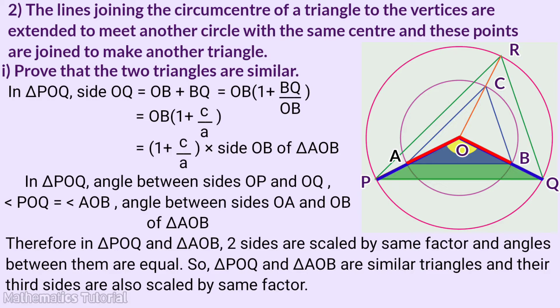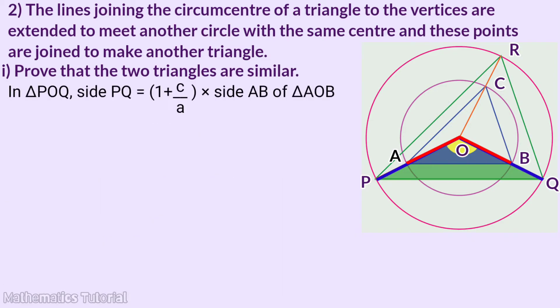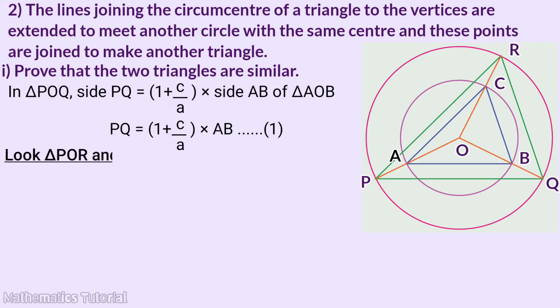These are similar triangles. The third sides will also scale: triangle POQ side PQ equals 1 plus C by A into side AB of triangle AOB. That is, PQ is equal to 1 plus C by A into AB. This is equation 1.